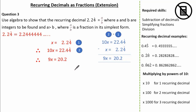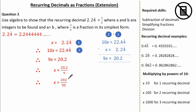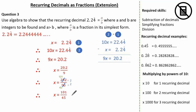Keeping our decimal place, 2 subtract 2 is nothing and 2 subtract 0 is 2. Therefore, 9x is equal to 20.2. Now let's find the value of x. x is 20.2 over 9. Because the question wanted us to write it as a fraction, by definition we need to write a and b as integers. So let's multiply the numerator and denominator by 10, giving 202 over 90. Both the numerator and denominator are even, so let's divide by 2. This gives us x is equal to 101 over 45. Therefore, we know a is 101 and b is 45, satisfying our question stating that a and b have to be integers and a is greater than b.